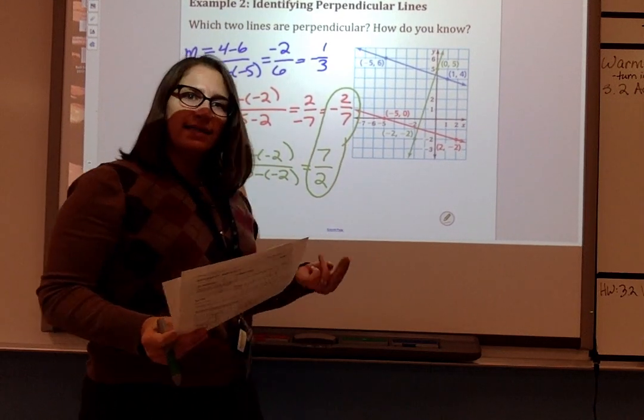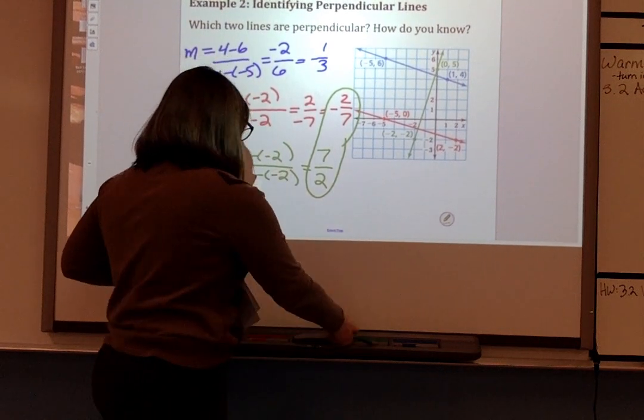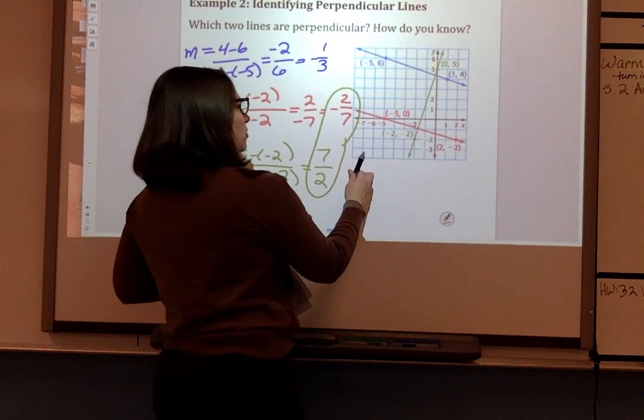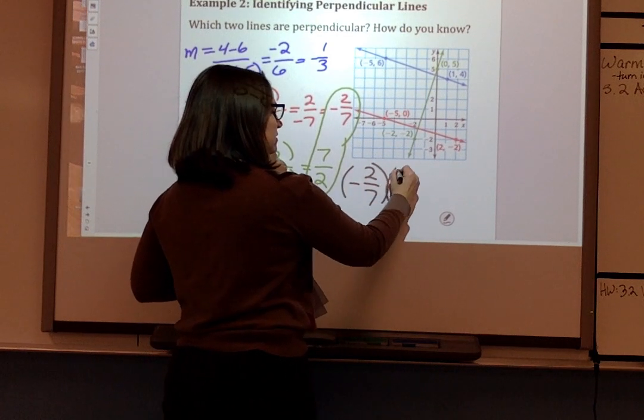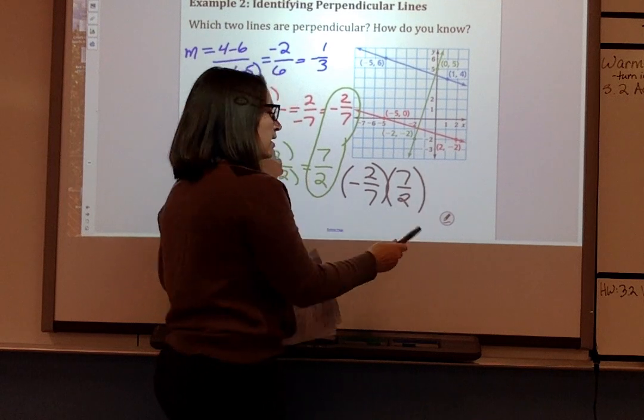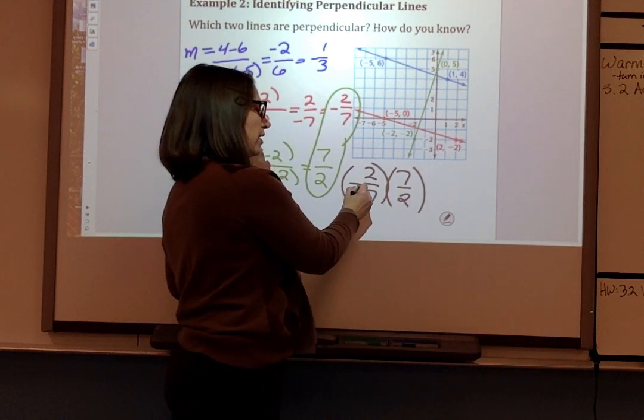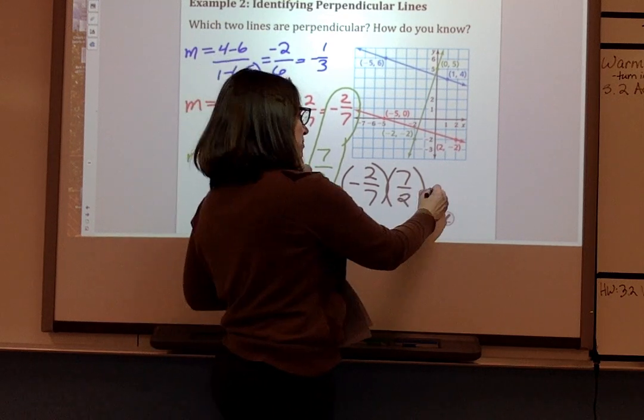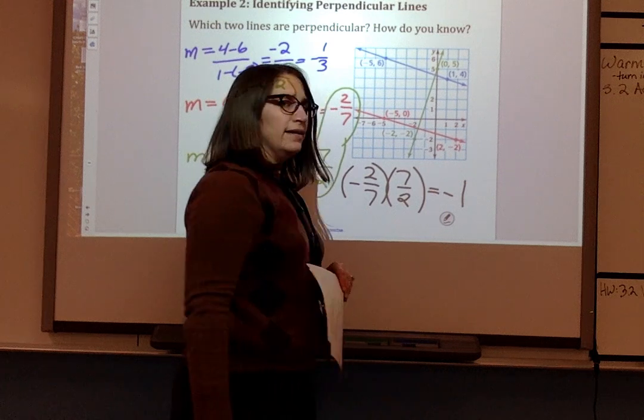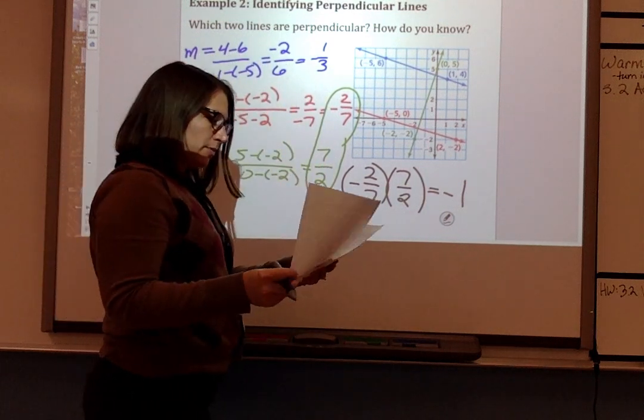If the product is negative 1, that means it's the opposite of the reciprocal. So let's check this out to double check. If we have negative 2 over 7 times 7 over 2, because the numbers are reciprocal, that part cancels out to 1, and then it's the opposite reciprocal. So 1 is negative and 1 is positive, we get negative 1. So the red line and the green line are perpendicular.